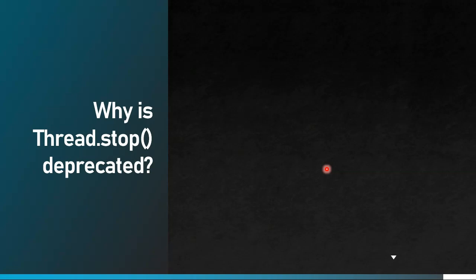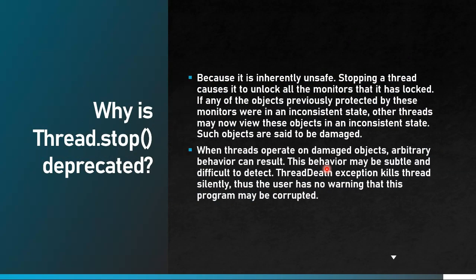Why is Thread.stop() deprecated? This question tests how deeply you understand multithreading. Thread.stop() is inherently unsafe — stopping a thread causes it to unlock all monitors it has locked. If any objects protected by those monitors were in an inconsistent state, other threads may view them in that inconsistent state. Such objects are said to be 'damaged,' and when threads operate on damaged objects, arbitrary behavior can result. Thread death also kills the thread silently, giving the user no warning.